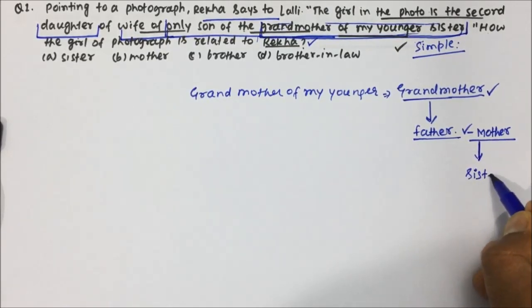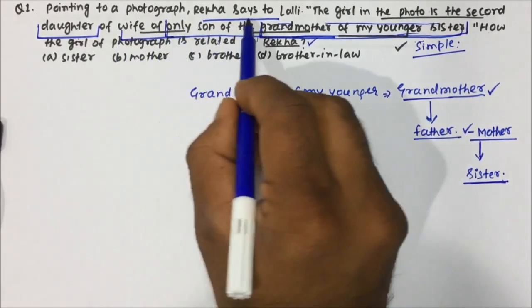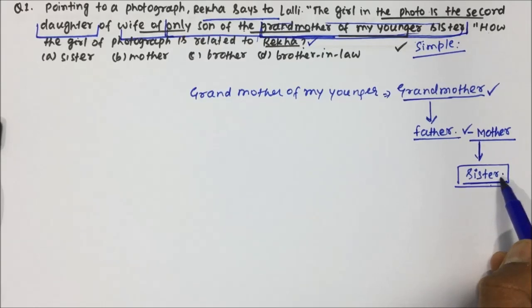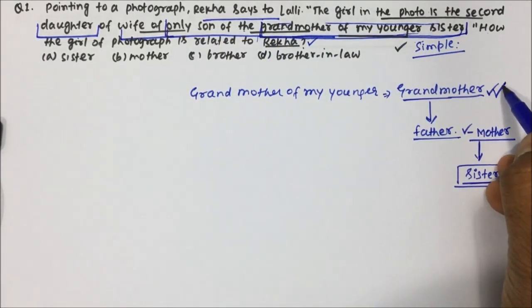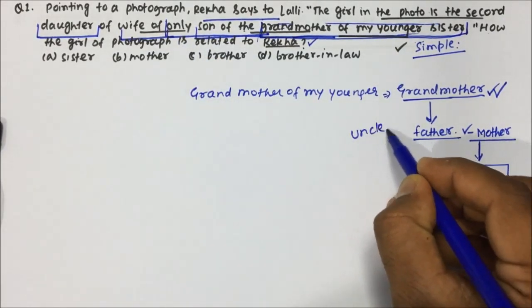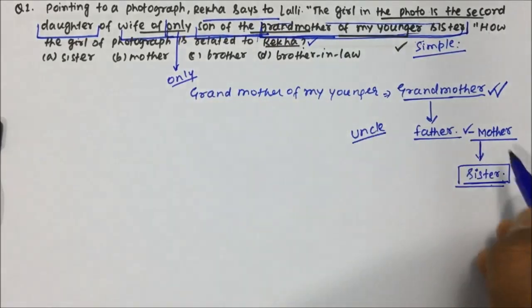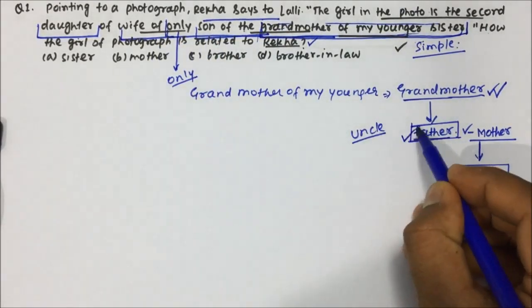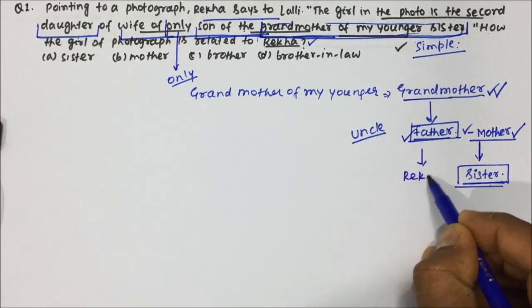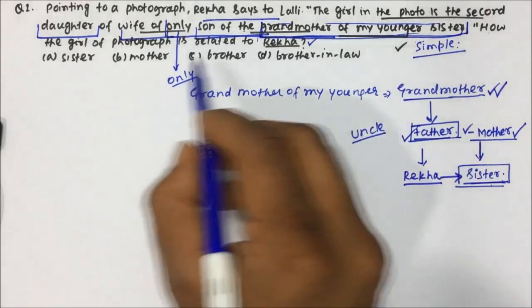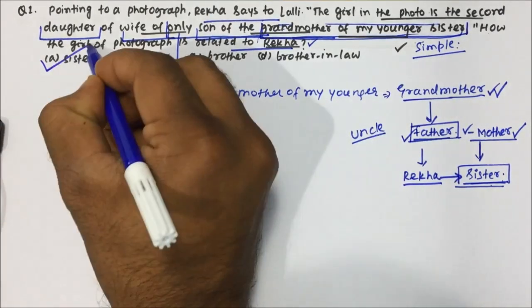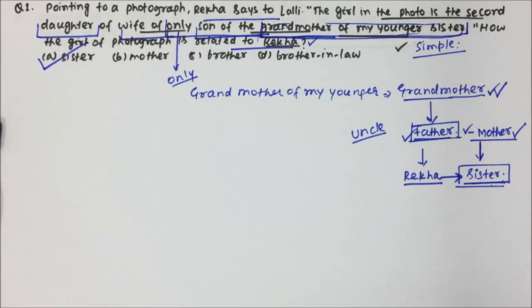So the girl in the photograph is the second daughter of my mother. A daughter of my mother will be my sister. Now, they mentioned 'second daughter' — the first daughter would be Rekha herself, and the second daughter would be Rekha's sister. So the girl in the photograph is the sister of Rekha, and option A will be the correct answer for question number one.